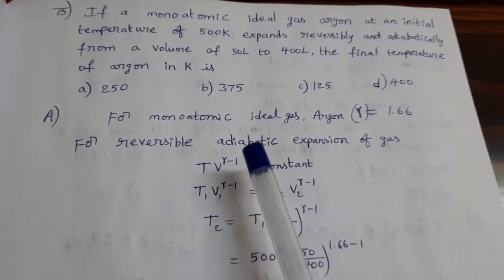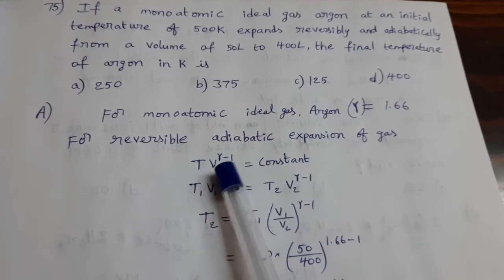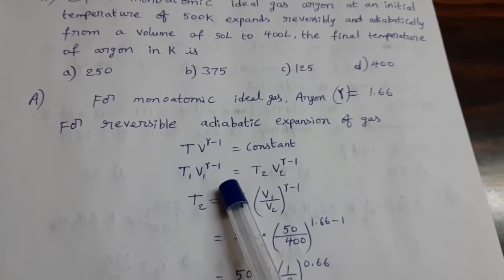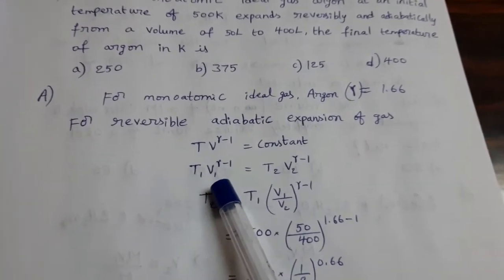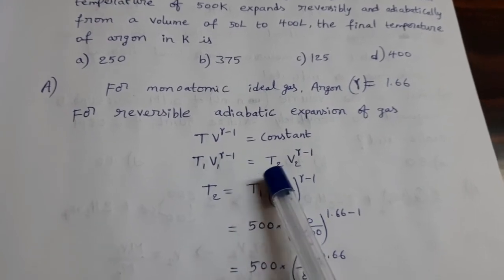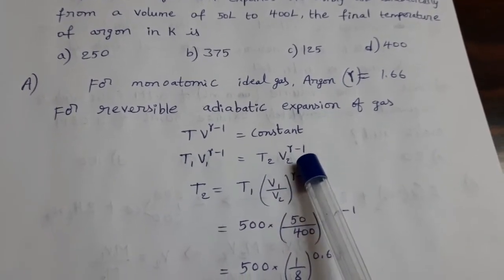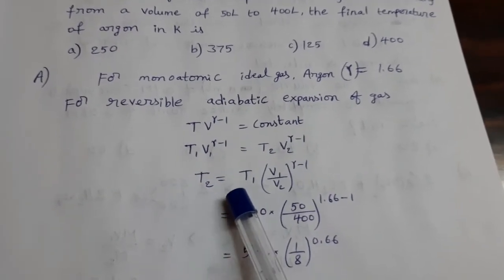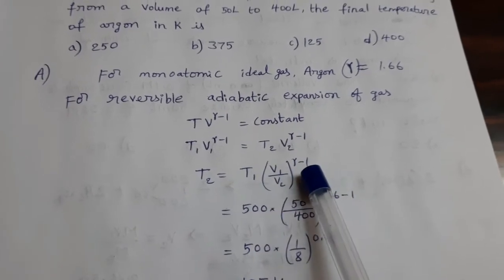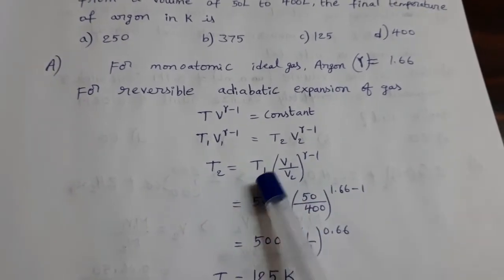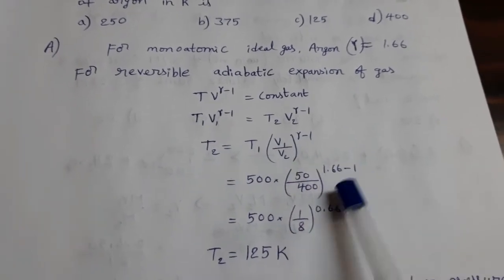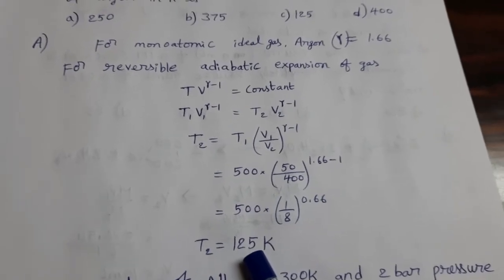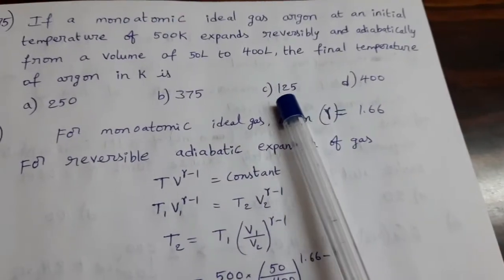temperature volume relation is T·V^(gamma-1) = constant. So we can write T1·V1^(gamma-1) = T2·V2^(gamma-1). We have to calculate T2. Then T2 = T1·(V1/V2)^(gamma-1). Substitute T1, V1, V2 values and gamma value. Then we can get T2 equal to 125 Kelvin. Option C is the answer.